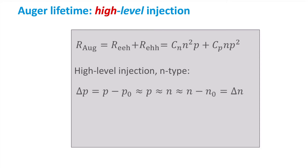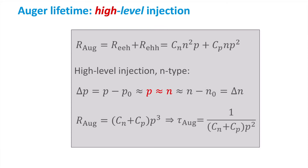Doing this again for an N-type semiconductor, we see that at high-level injection the carrier density for both holes and electrons is larger than the thermal equilibrium value, and we can state that in this case the electron concentration is equal to the hole concentration. Using this, we then find that the Auger recombination rate varies to the third power of the carrier concentration, and we can again find the lifetime. It is important to note that the lifetime is now inversely proportional to the carrier density squared, implying that the lifetime is dependent on the injection level.